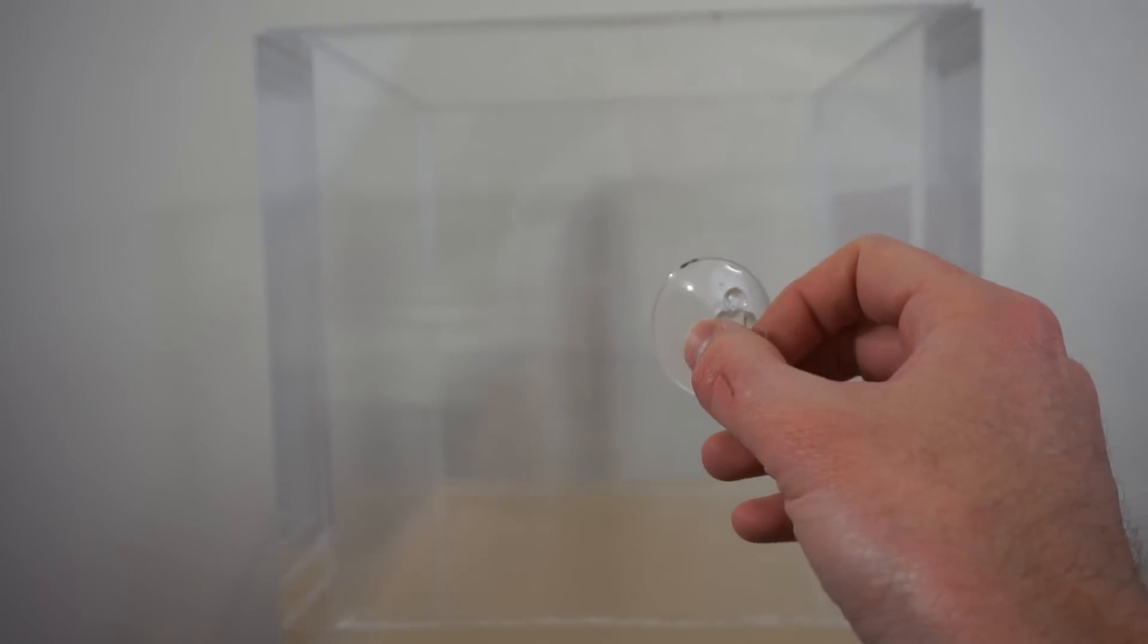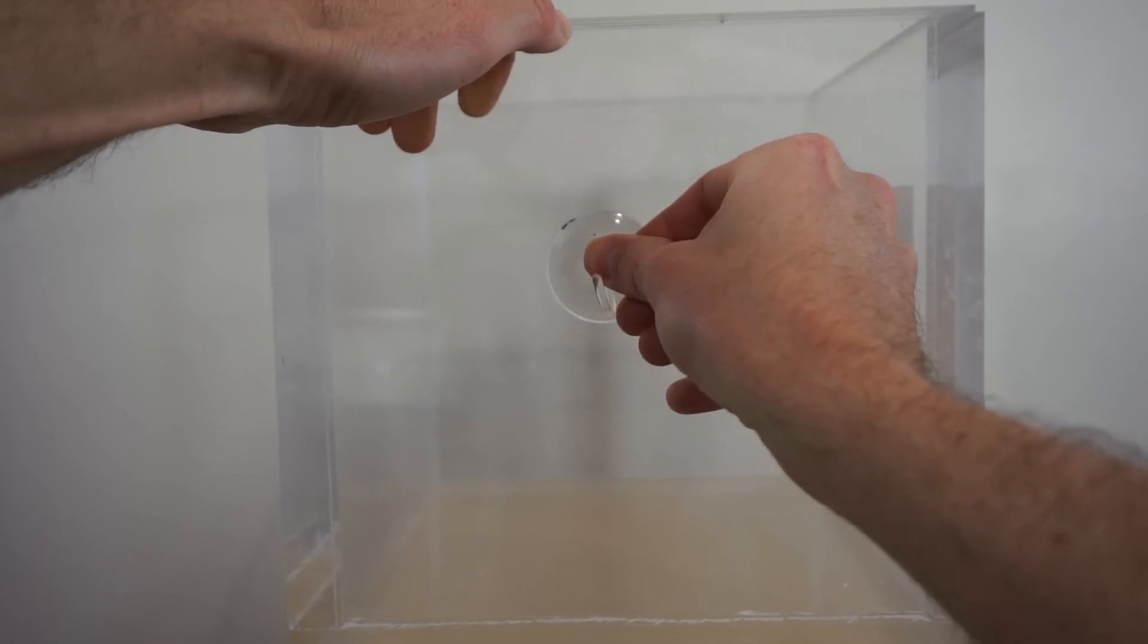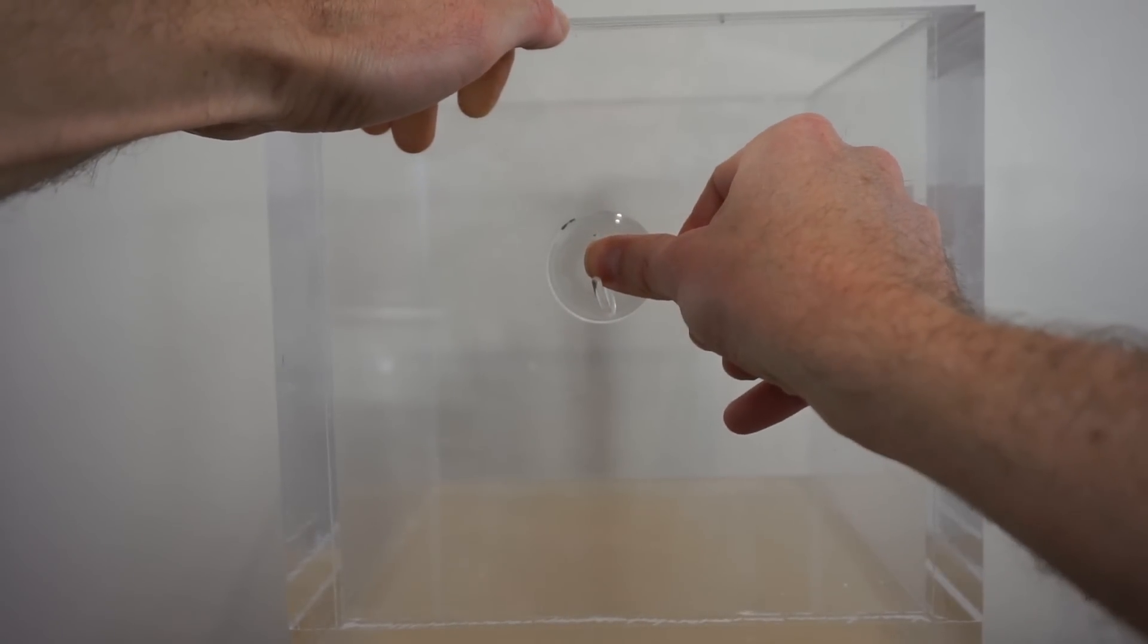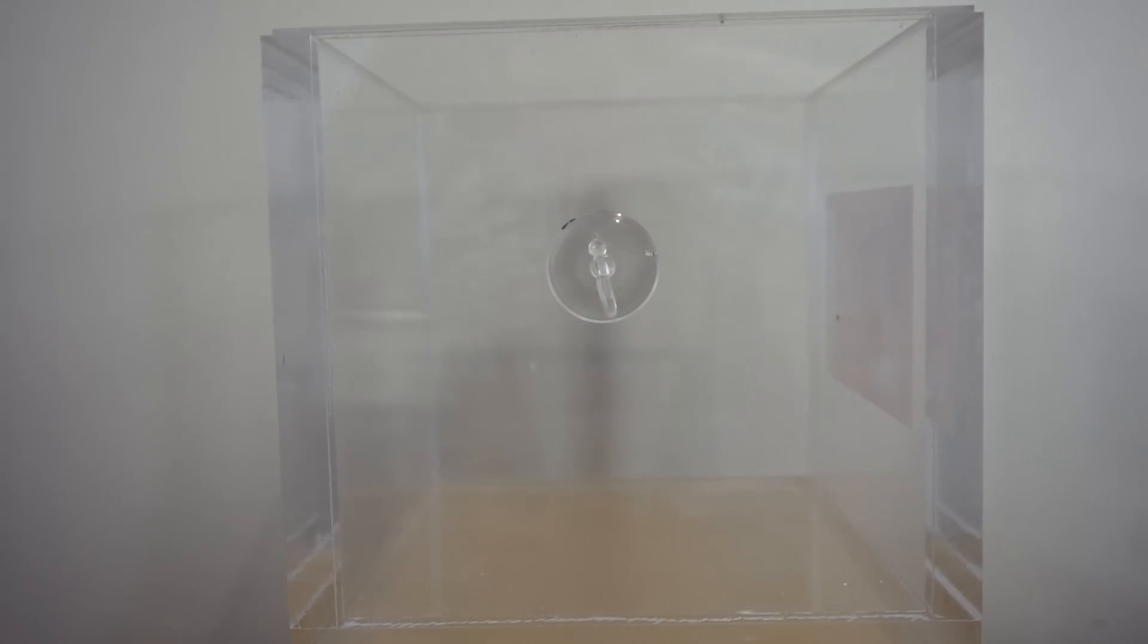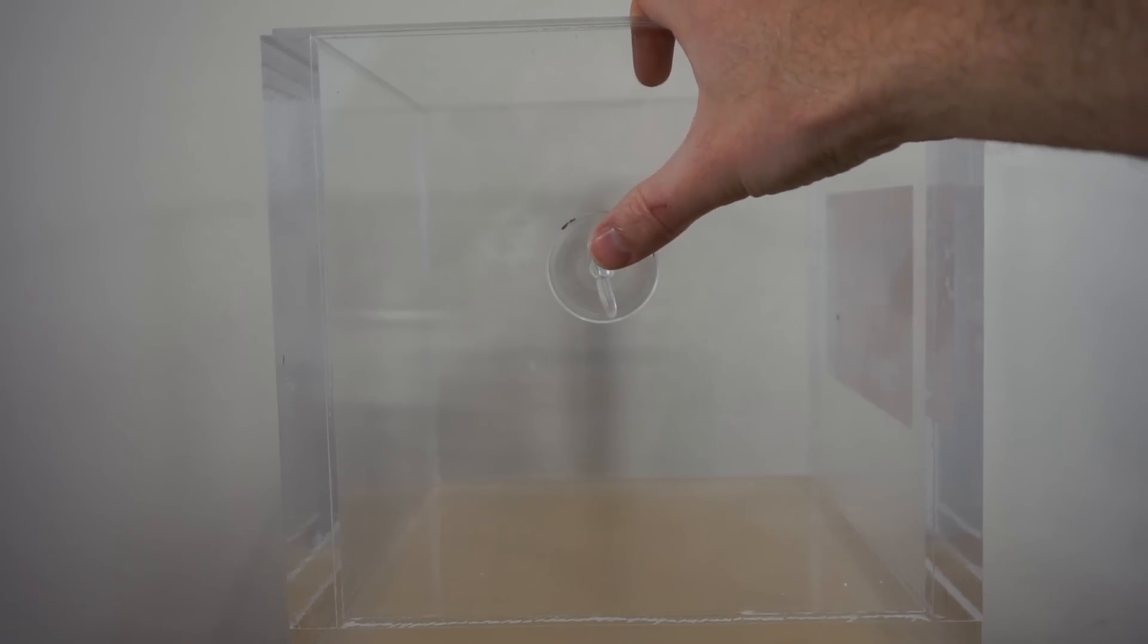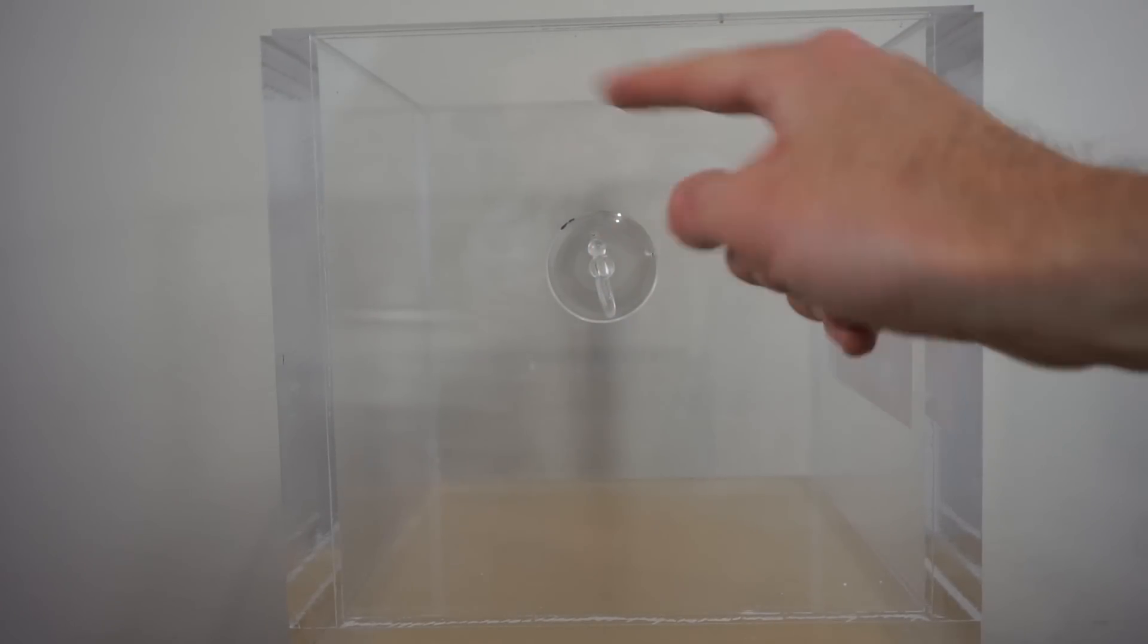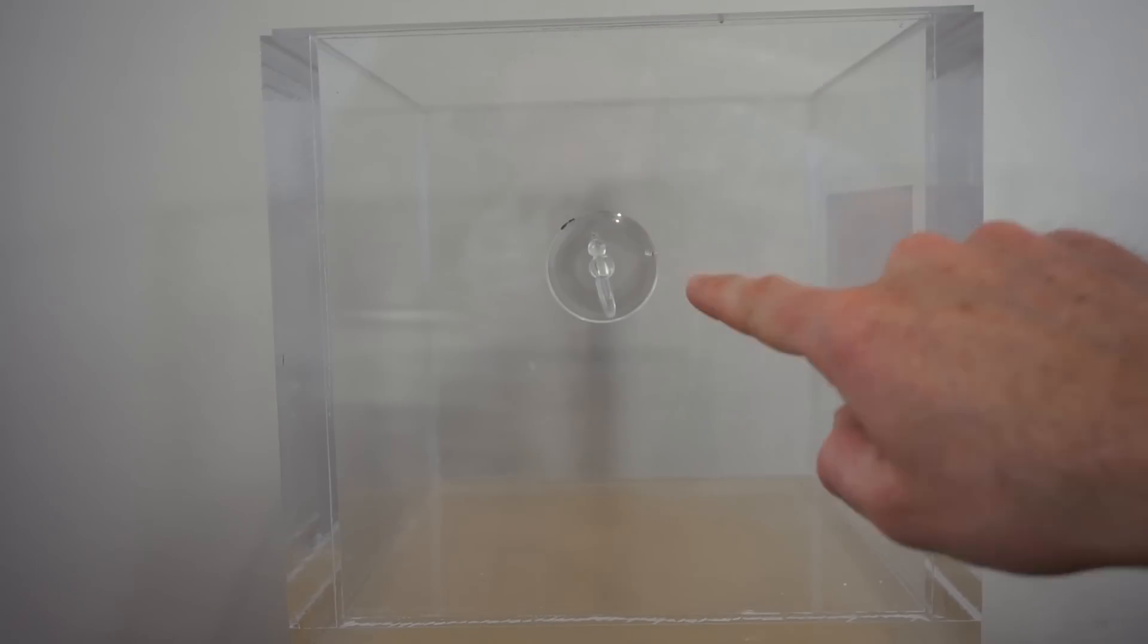So how a suction cup works is that you push it onto a surface, and you push and you get the air bubble out of there, and then when you release it, it stays stuck to the wall. And the reason that happens is because you push the air out of there, and so you no longer have equal pressures on the inside and the outside, so the outside pressure keeps it pushed against the wall.